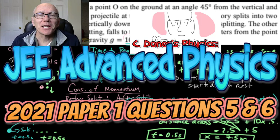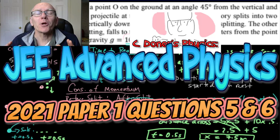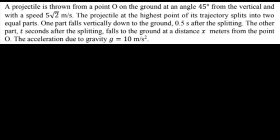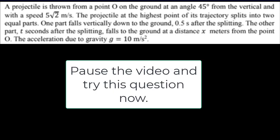The JEE Advanced Physics exam has some great questions. Today we're going to look at paper 1, question 5 and 6 from the 2021 exam. It's on projectile motion. I'm going to try to solve it as much as possible without using the algebra and the equations, just with physical reasoning. Try the problem yourself before watching my solution. So pause the video, try the question, come back for the answer.